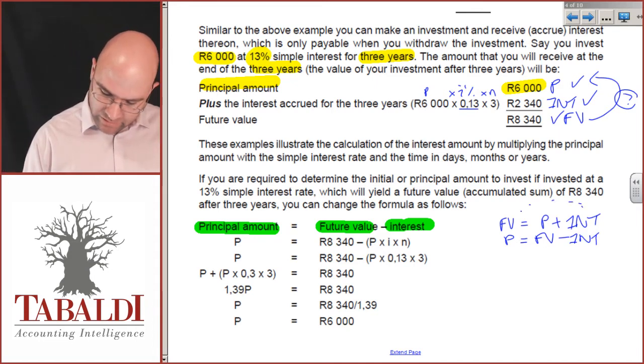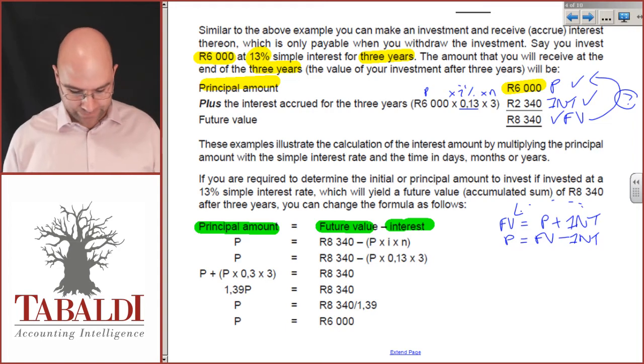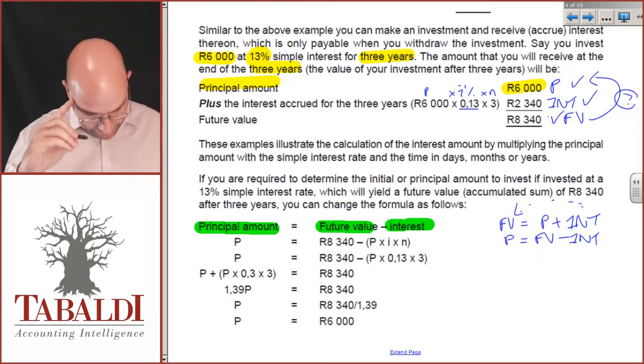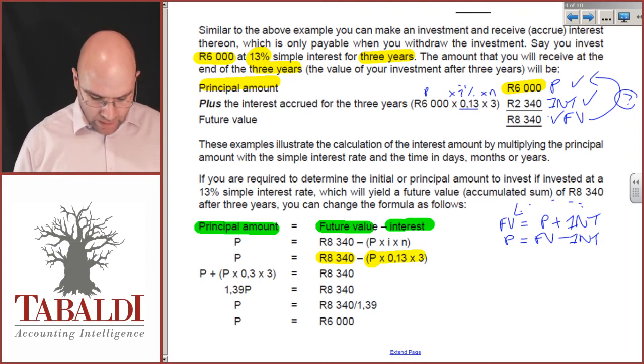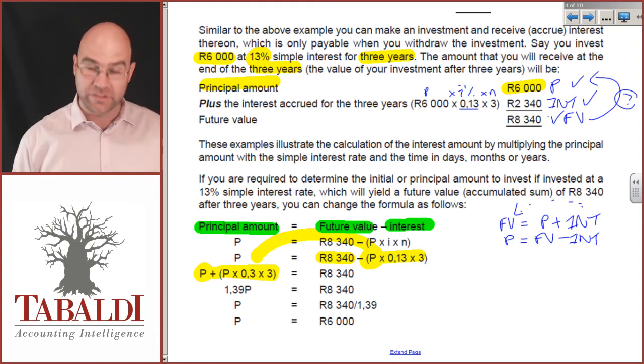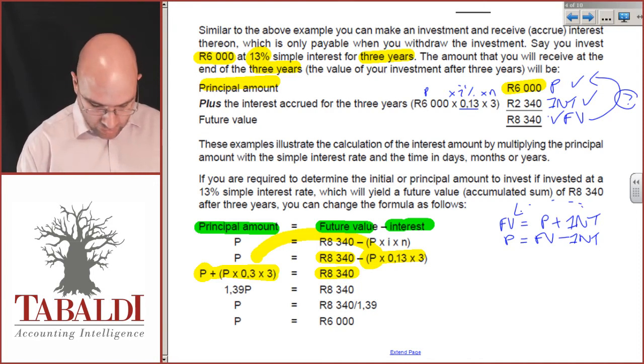So, I just moved the interest over to the left-hand side of the column and I needed to change the sign. Then, it's quite easy. If I was given the future value being 8340, I would then take my principal minus the interest. Which if I wanted to change it around, pretend I didn't know the principal amount, I would then move everything to the other side and swap the principal to the other side and change the sign. So, principal plus principal times 0.3 times 3 gives me 8340, which is 1.39p equals 8340. Principal then is 8340 divided by 1.39, 6000.